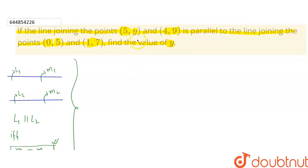We have two points. Let's say this is point P which is (5, y), and another point we have Q which is (4, 9). So the line joining between these two points will be like this. This will be the line joining between P and Q.